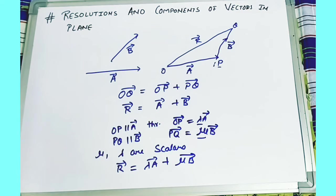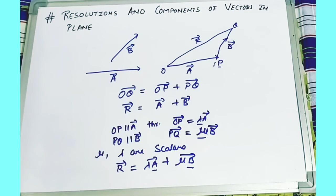When they are scalars, we can say R equals lambda times A vector plus mu times B vector. So we can see that vector R has been resolved in the direction of A and B, and these are the components of the given vector. This is what resolution of vectors means — the splitting of the vector in the same plane. If we have to resolve R in the given direction of A and B, we find lambda and mu.